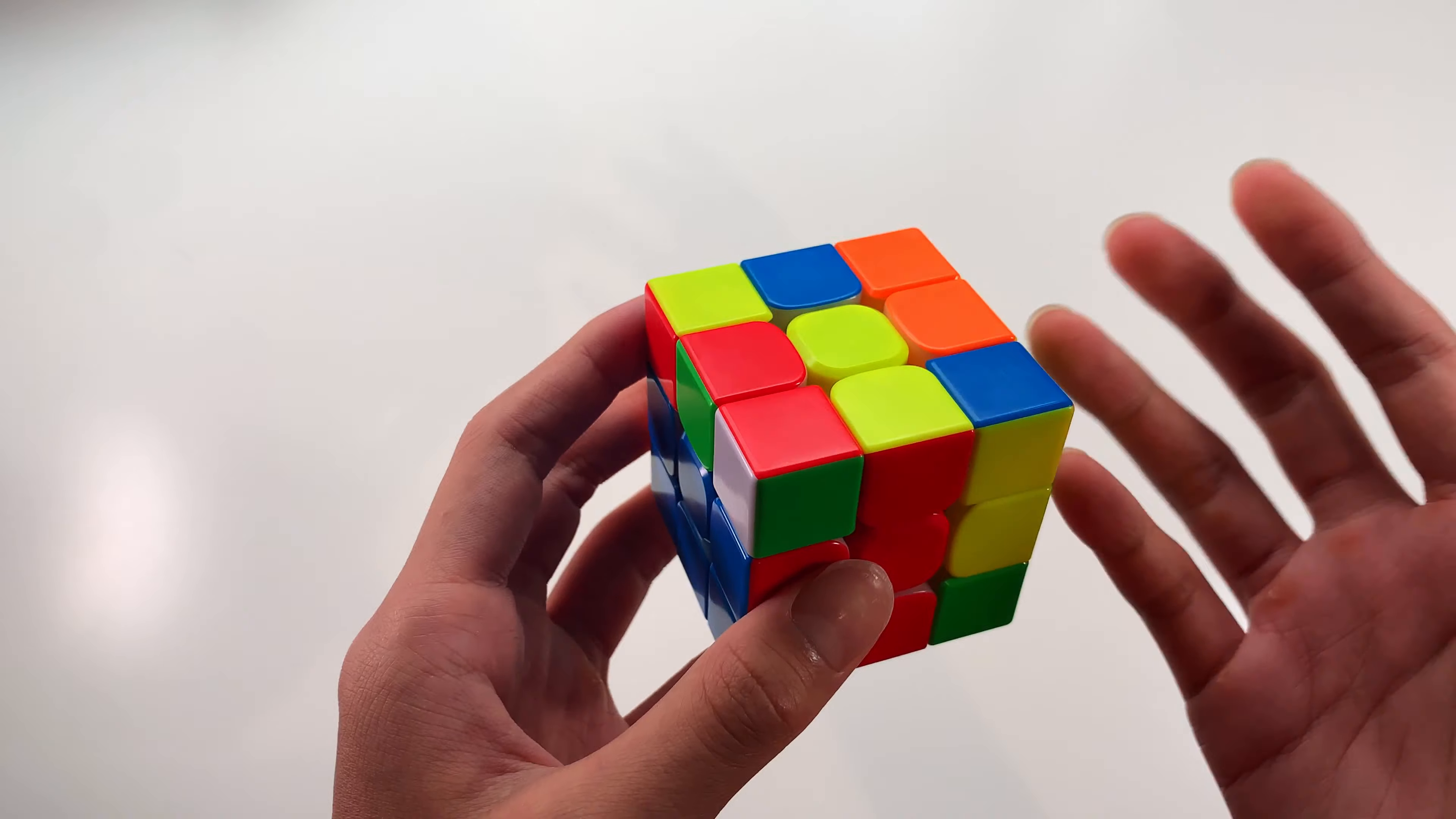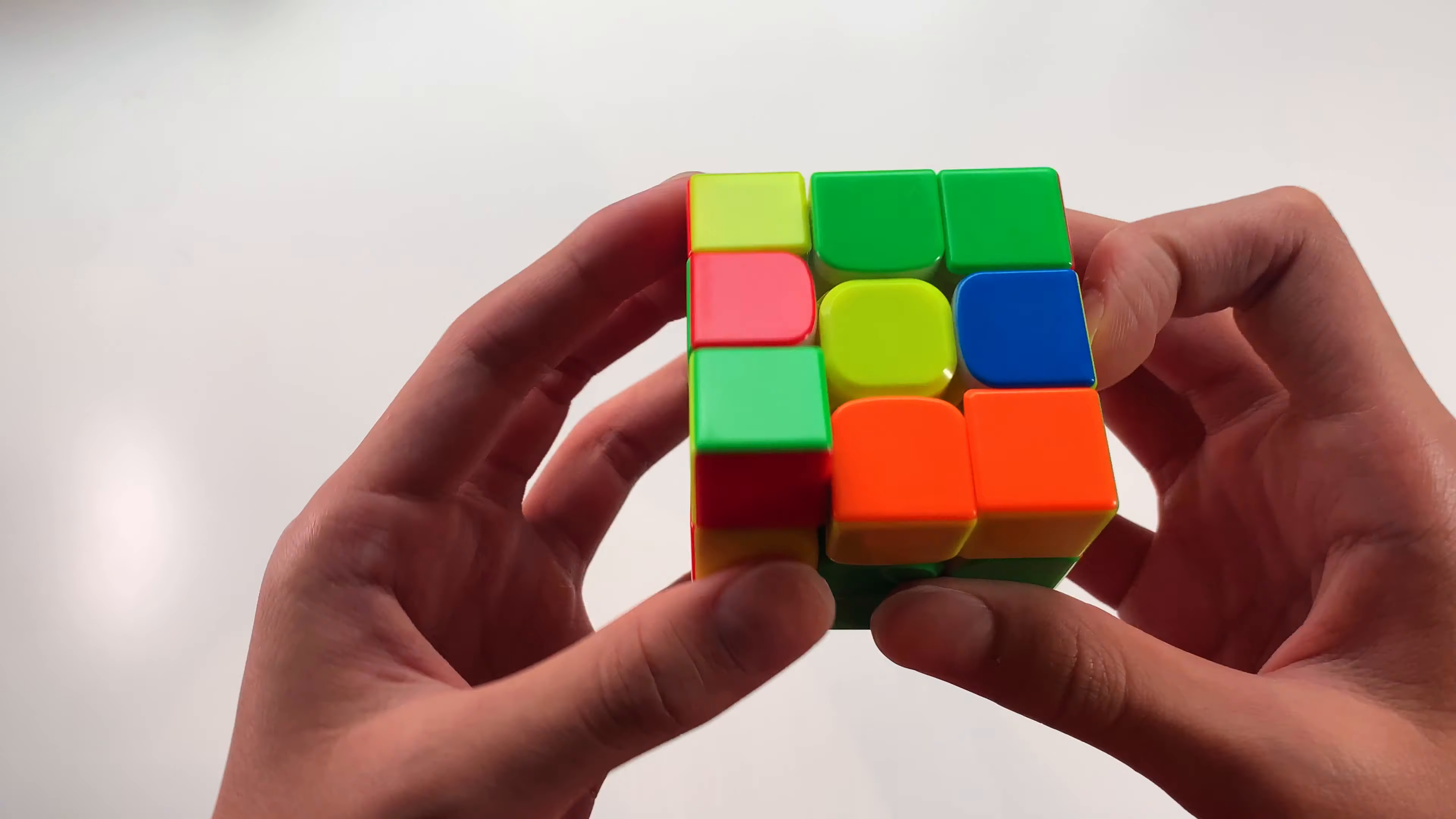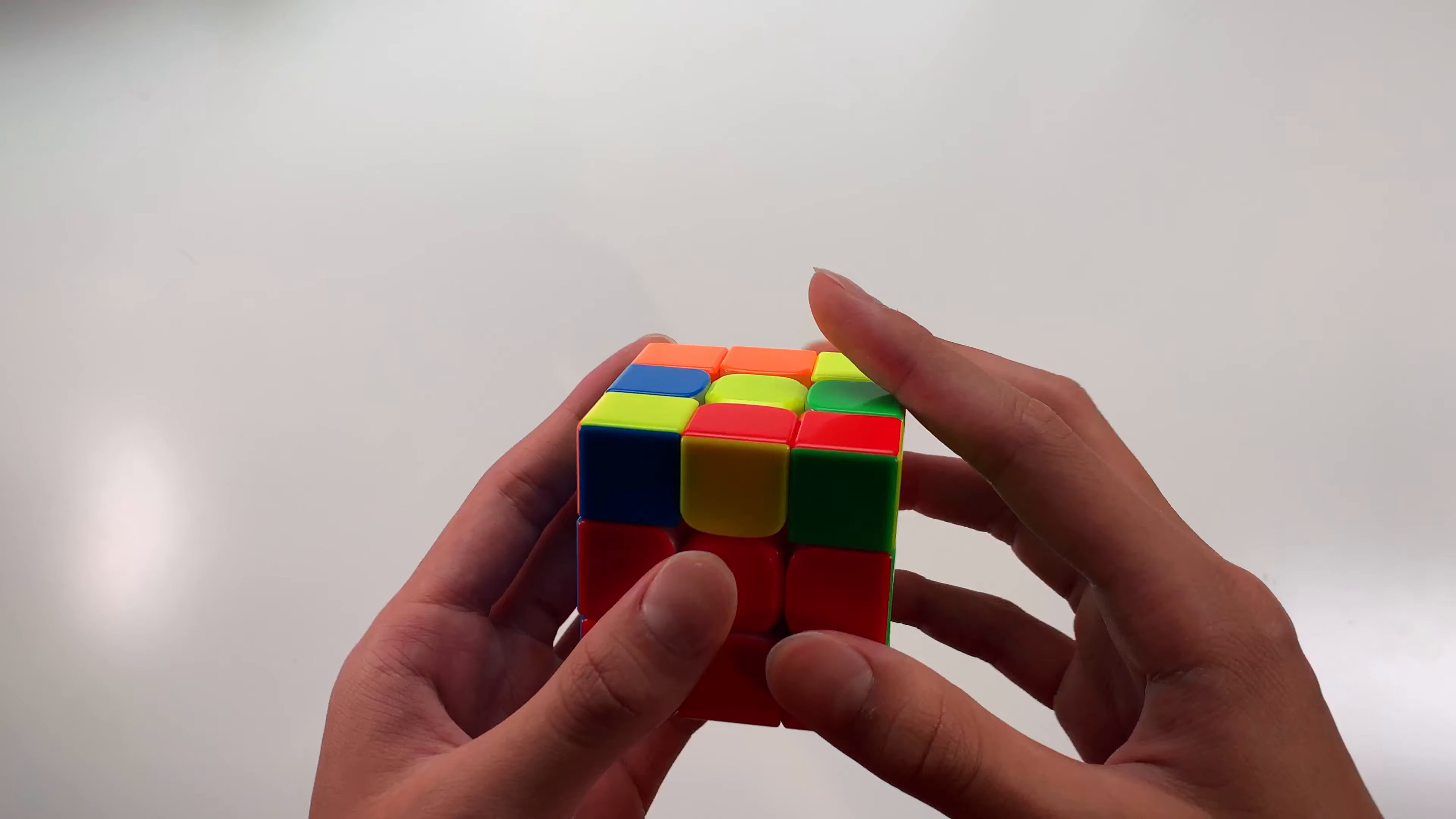Next up, we have this case. And I know the most famous way to do this is to just rotate, pair it up like this, rotate again, and insert it. But I'm not a big fan of using two rotations to solve one F2L pair.